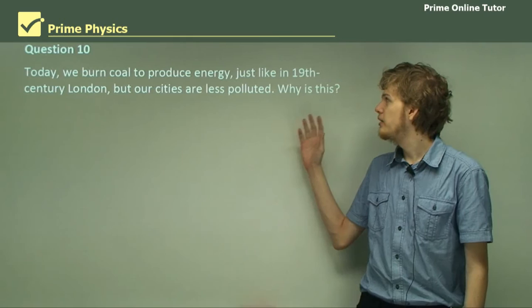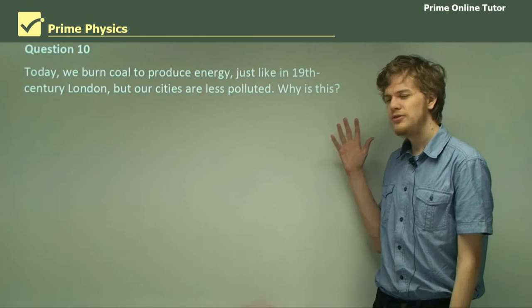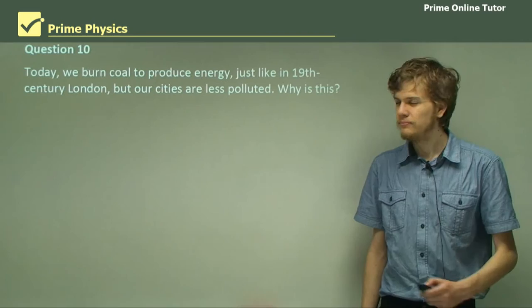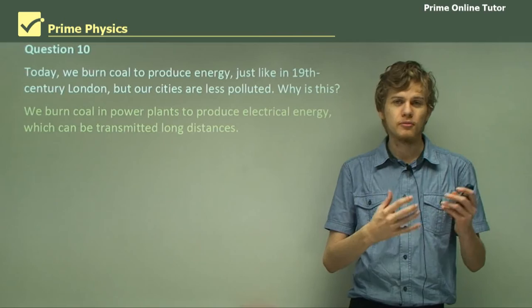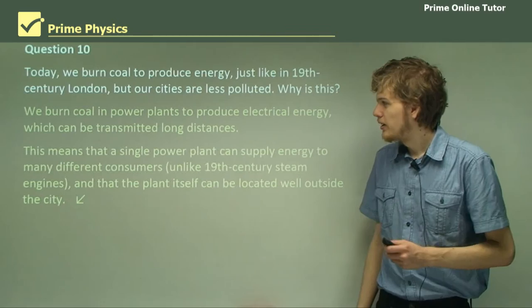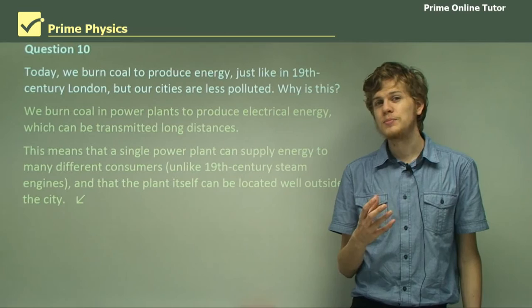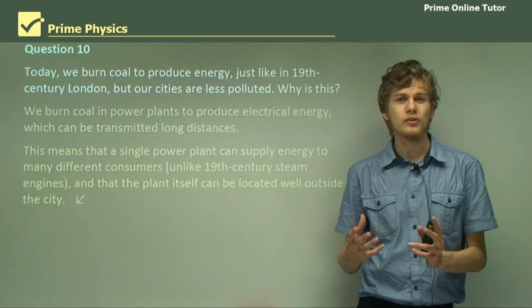Question ten: today we burn coal to produce energy, much like in 19th century London. But 19th century London became very polluted due to the use of fossil fuels, and our cities are relatively clean. So how could this happen? Surely industry has only grown larger since the 1800s. Well, the answer of course lies in electricity. We burn coal in power plants in order to produce electrical energy — we're still extracting energy from the coal, but instead of using it directly to produce mechanical energy, we use it to produce electrical energy. Because electrical energy can be transmitted long distances, we can build the power plant far outside the city where the energy is being used. This means we don't have to have large amounts of fossil fuel being burned in the city itself, and this makes our cities less polluted. That's the end of the questions.